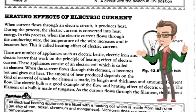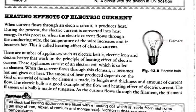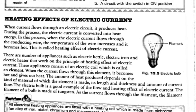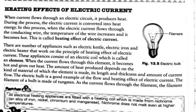During previous classes, we have studied that electricity can cause different effects. When electric current flows through a circuit or through a conductor, it may cause some heating effect, it may create a magnetic field around it, or it may cause some chemical effects — that is, it can trigger some chemical reactions.